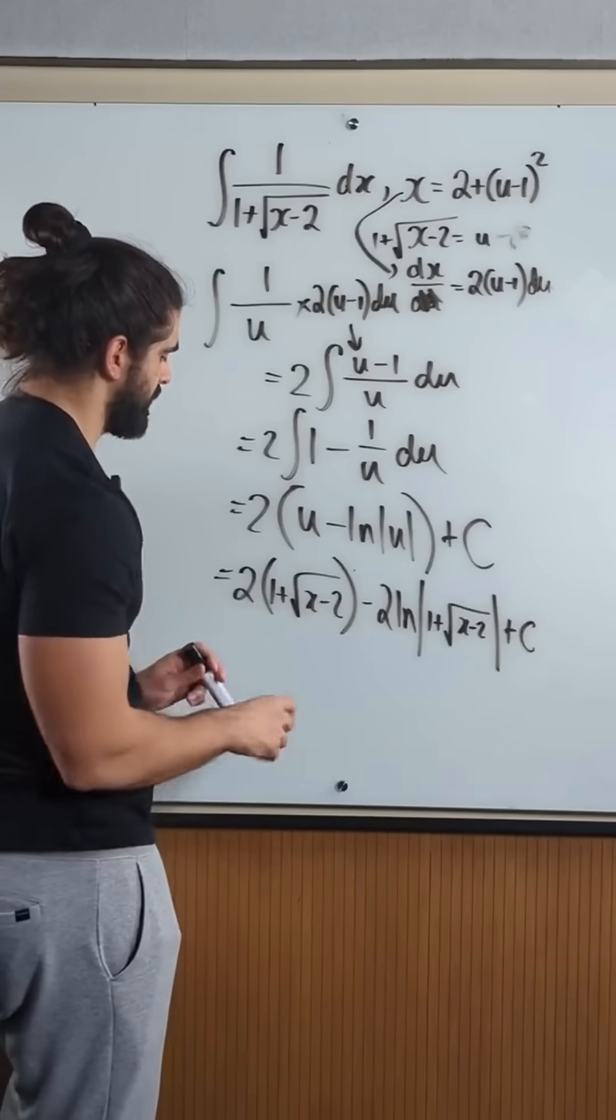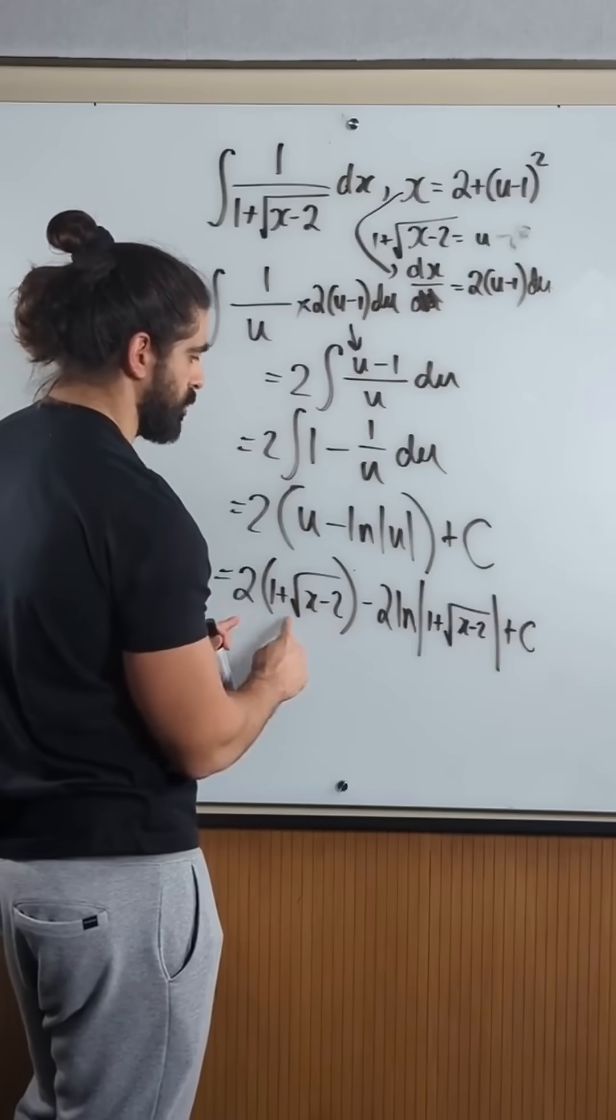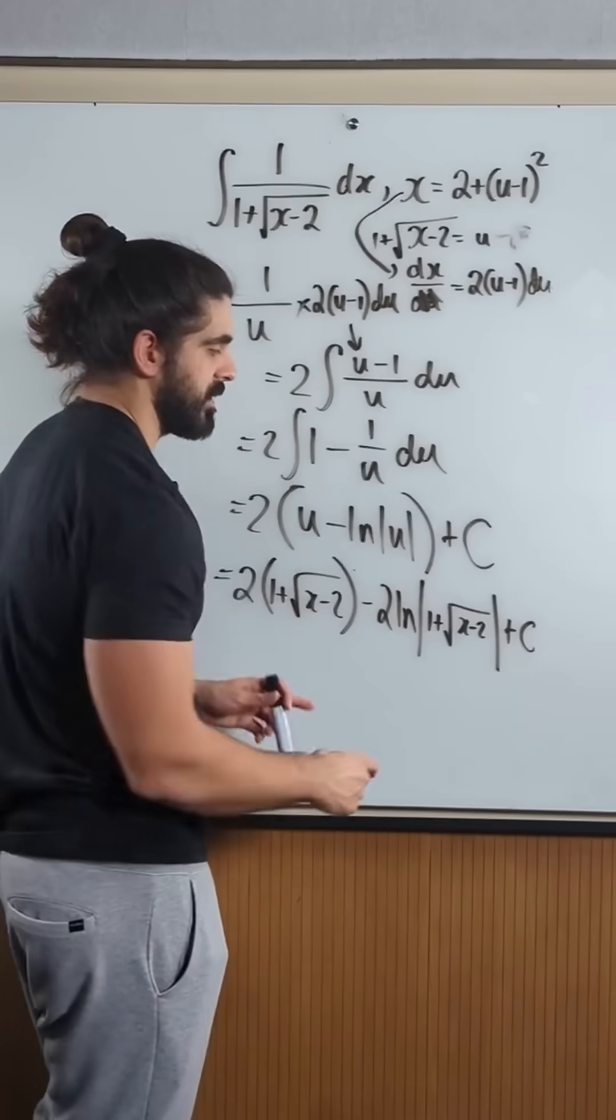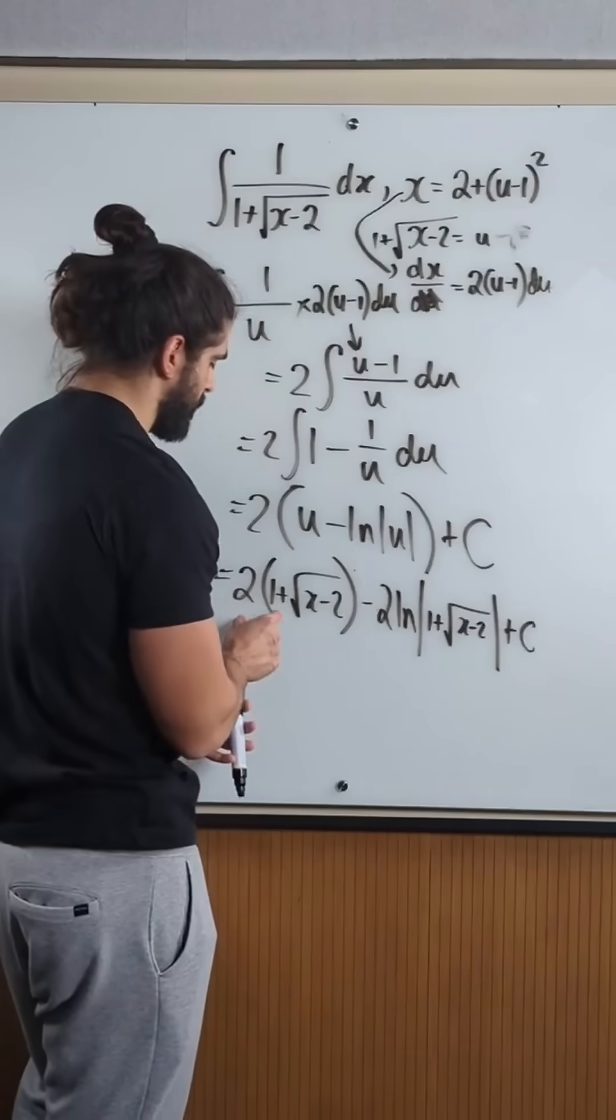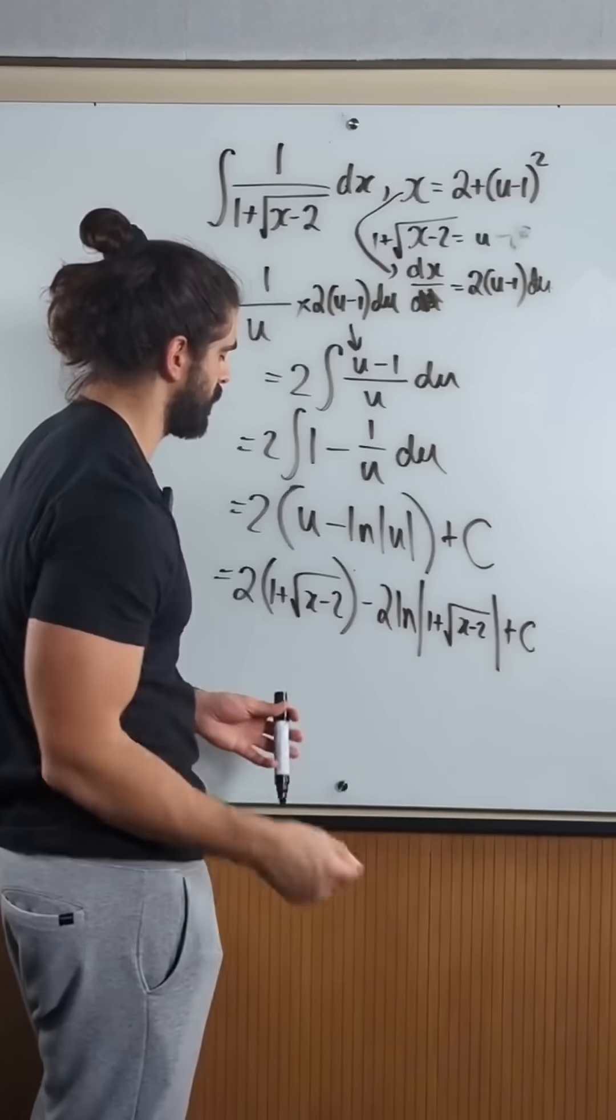Now one thing I notice here is that this gives me 2 plus 2 root, but 2 plus c is just an unknown constant.